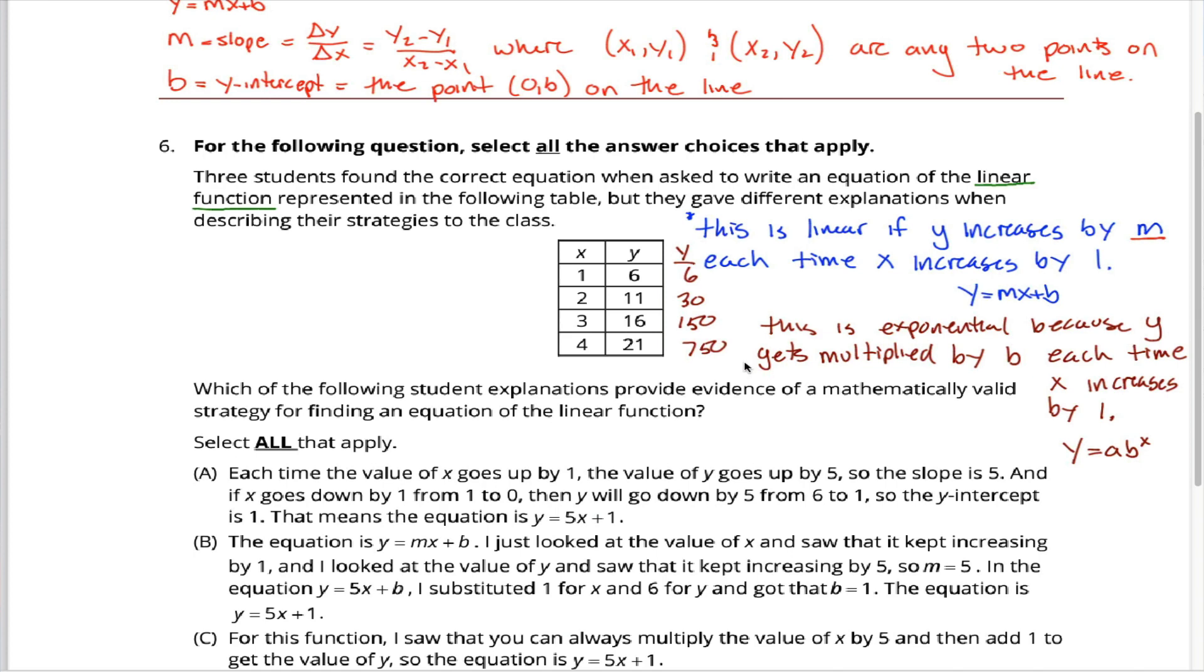But fortunately, if the student is the slightest bit clever, they can extrapolate to figure out what y would be if x were equal to 0. If y increases by 5 each time x increases by 1, then y decreases by 5 each time x decreases by 1. So if we decreased one more, our x-value would be 0, and our y-value would be 1. Because the point (0, 1) is on the line, the value of b is equal to 1. What the student said is, and if x goes down by 1 from 1 to 0, then y will go down by 5 from 6 to 1, so the y-intercept is 1. We know that m is 5 and b is 1. The equation is y equals 5x plus 1. Perfect. Student A came up with a mathematically valid strategy for finding the equation of the linear function.